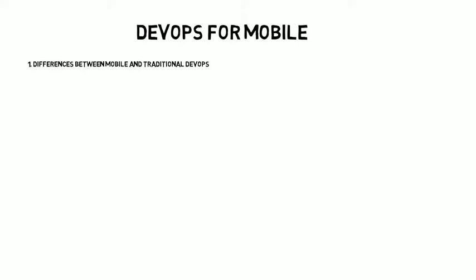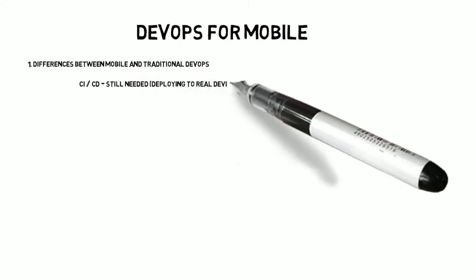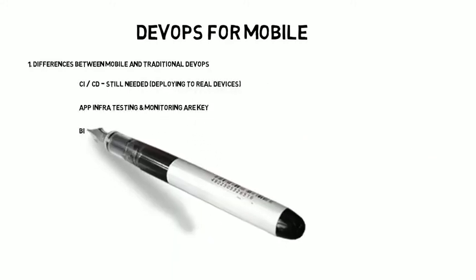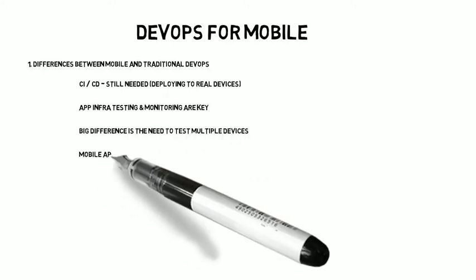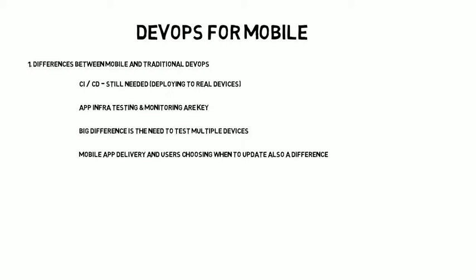So, differences between mobile and traditional DevOps. CI and CD — continuous integration, continuous delivery — are still needed for deploying to real devices. App infrastructure and monitoring are very important. Instead of deploying to a couple of browsers, you have to look at how your app works on dozens, if not hundreds, of different devices, because the mobile landscape changes so frequently. A big difference is the need to test across those multiple devices.